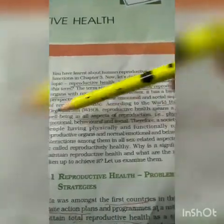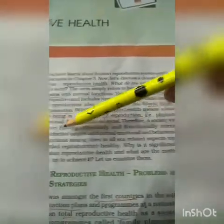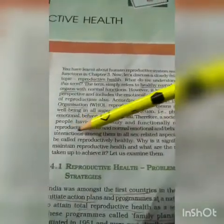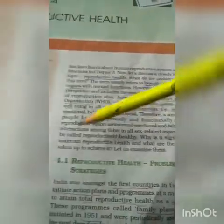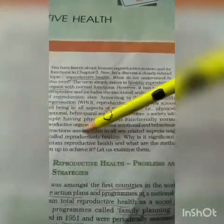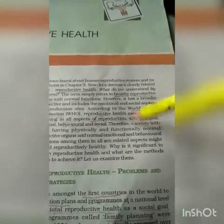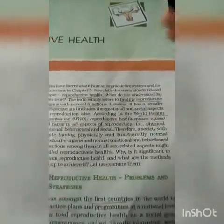A society with people having physically and functionally normal reproductive organs, and normal emotional and behavioral interaction among them in all sex-related aspects, might be called a Reproductive Healthy society. This is a person who is physically, functionally, emotionally, and behaviorally normal in reproductive behavior.